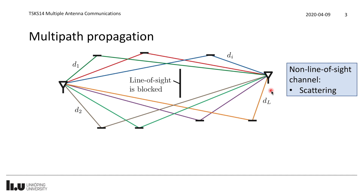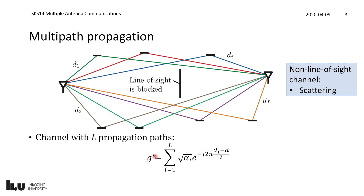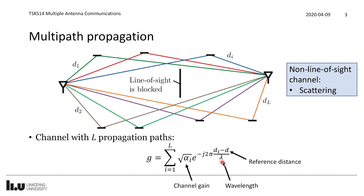The received signal will be the combination of signals from these L paths. We write the channel G as a summation over L paths, each with a channel gain alpha_i and a phase shift term e^{-j2π(d_i - d)/λ}, where d_i is the distance of the i-th path, d is the reference distance, and λ is the wavelength. This phase term describes how far off you are in time delay or phase when taking samples.